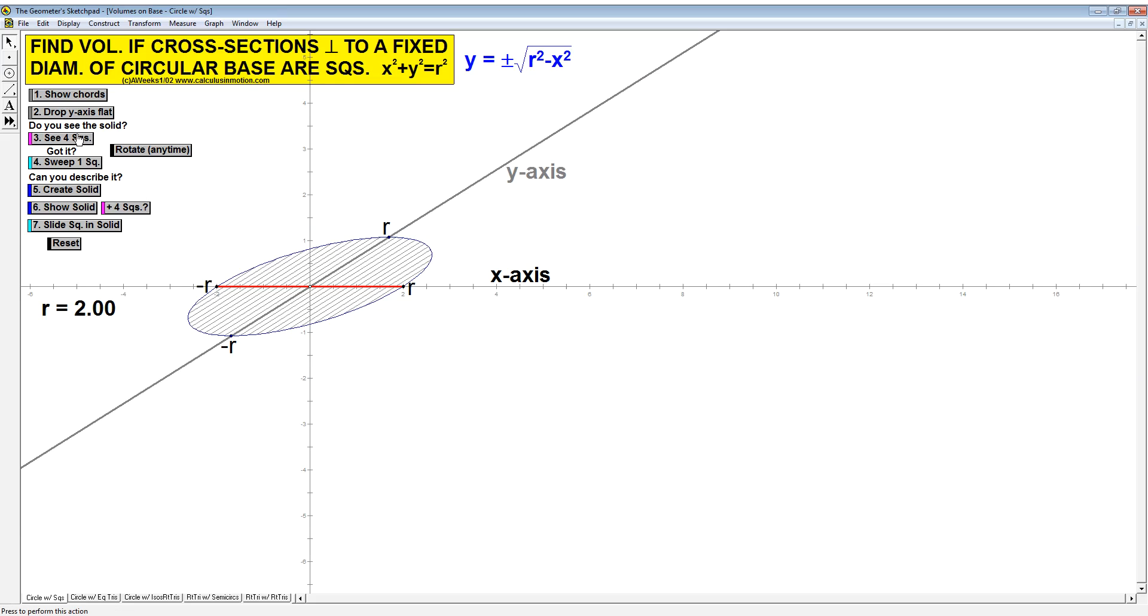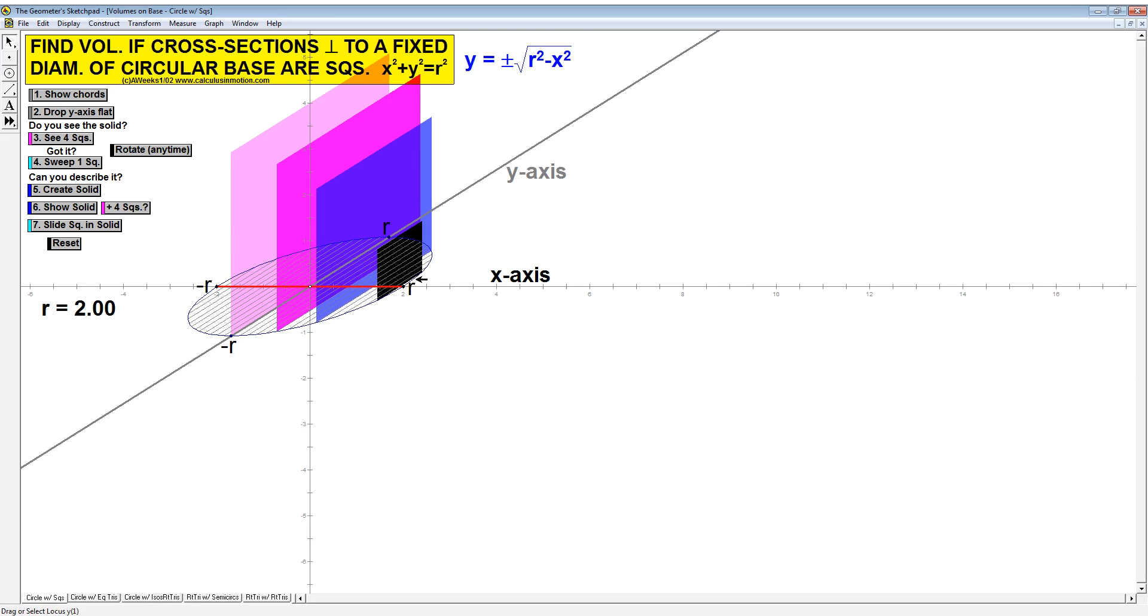Let's get four squares onto the screen, and you can see them right there. When the two curves are close to each other, the base of the square is actually not all that long. A square has all four sides the same length. Therefore, the height of the square will be the exact same distance as the length, so the height is not all that large as well.